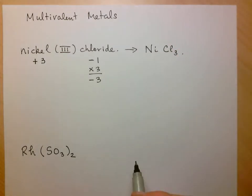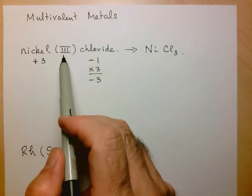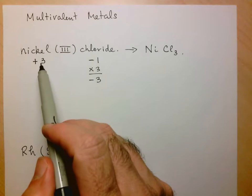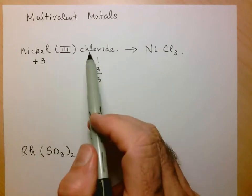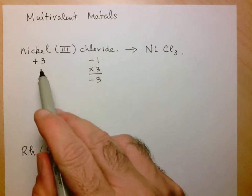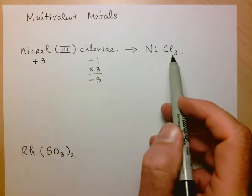So again, just to repeat, this tells us we have a multivalent metal, tells us what the charge has to be, and here chloride indicates that we're working with the chlorine ion, and we balanced out to get a neutral particle.